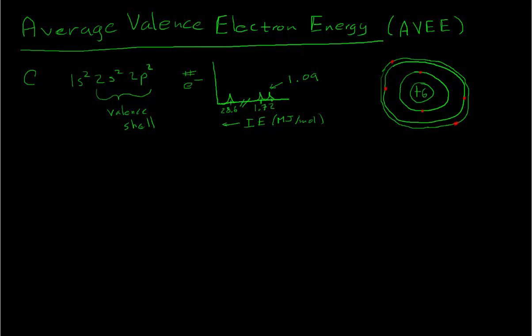Whether an electron is trying to be pulled away by another atom or perhaps donated by another atom, how strongly does an atom pull on those valence electrons? We can measure that property with something called average valence electron energy, or AVEE for short. Let's consider how we might calculate the average valence electron energy for carbon.